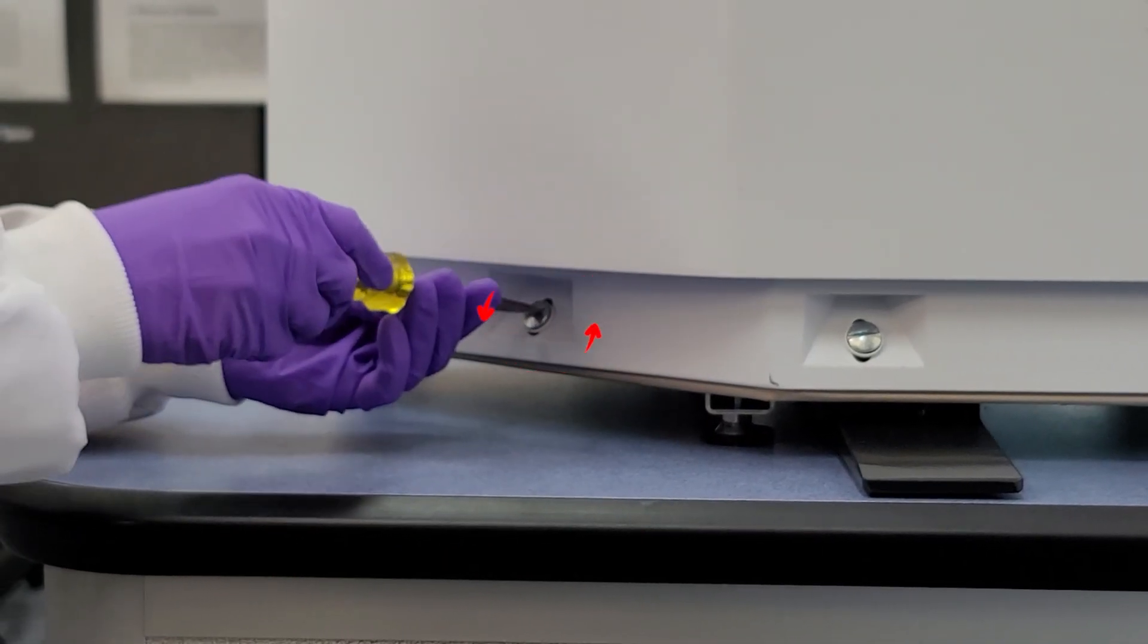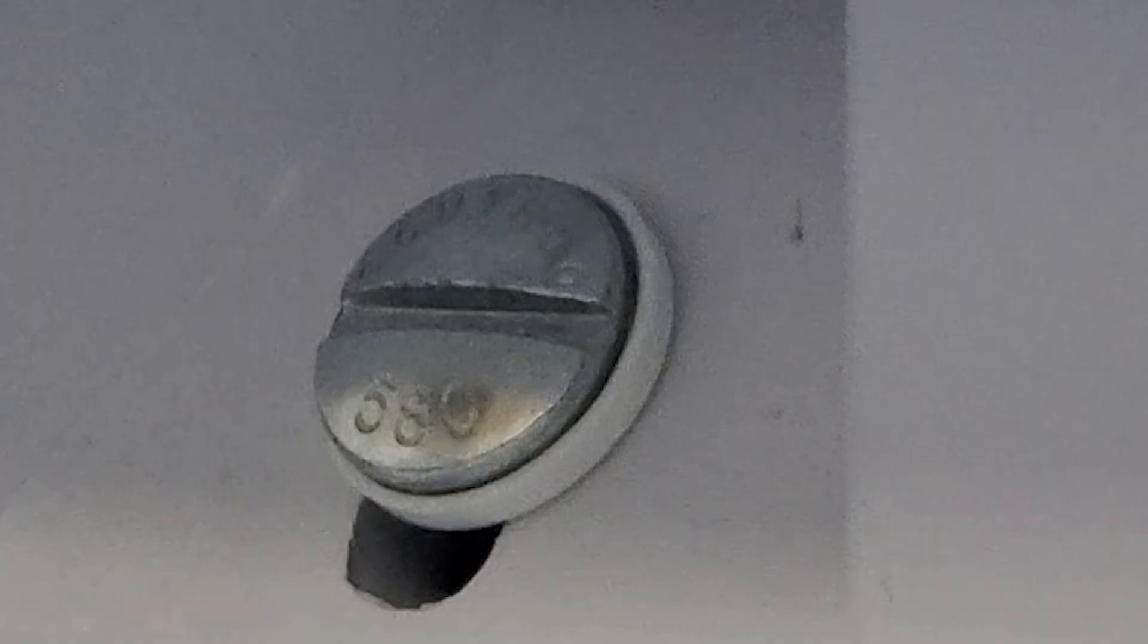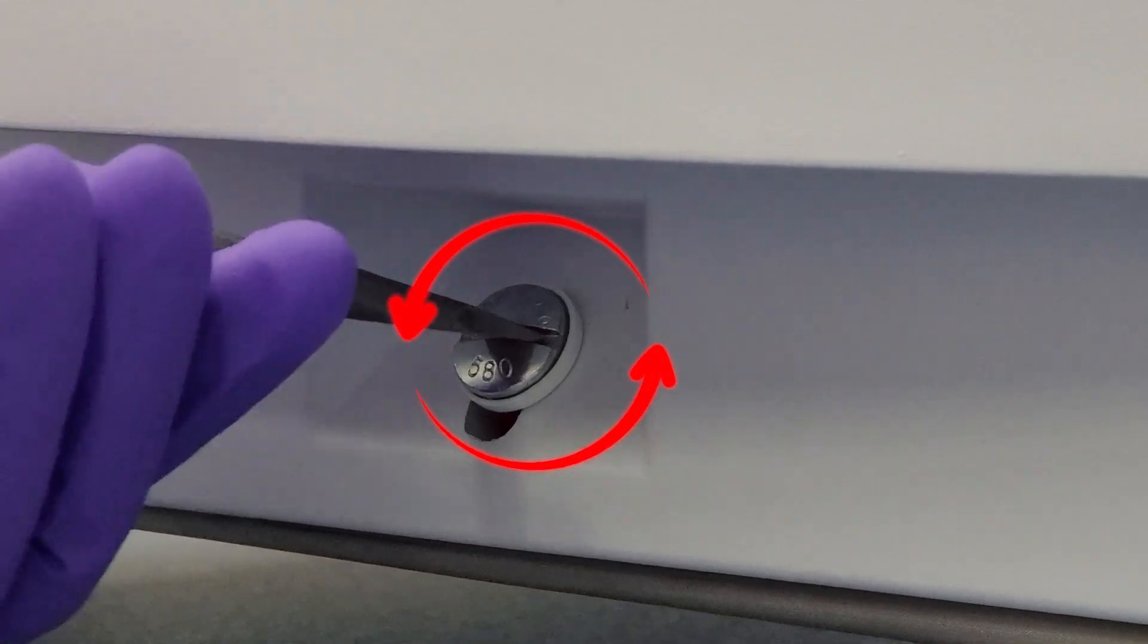Use a large flat-bladed screwdriver to unlock the three fixing screws. Rotate each screw to the vertical position to unlock.